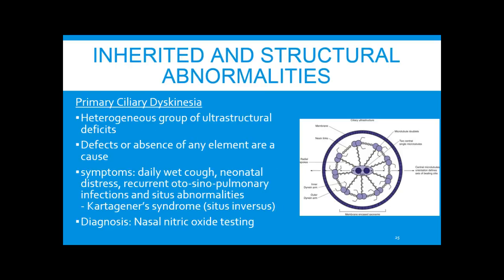Primary ciliary dyskinesia is a heterogeneous group of ultrastructural deficits affecting any area of the cilia. It's difficult to diagnose as no single gene is implicated. It should be suspected in any patient with daily wet cough, neonatal distress, recurrent sinopulmonary infections, or Kartagener syndrome. Diagnosis is usually done in infancy or childhood using nasal nitric oxide testing — an abnormally low level is suggestive. If low, genetic testing should follow.